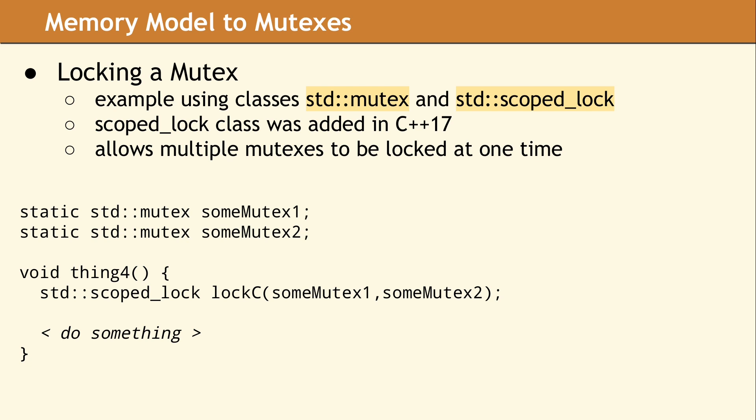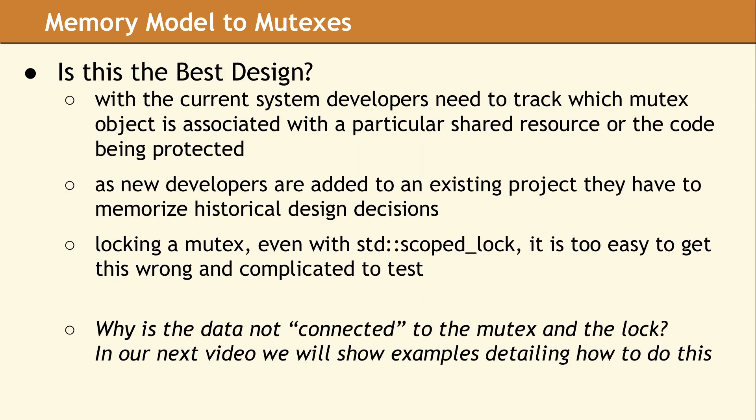The final lock class we want to show is std::scoped_lock. This is a relatively new class which was added in C++17. The constructor is variadic and accepts any number of mutex objects, which can be locked as one operation. The reason you may want to lock multiple mutexes at the same time is that the constructor of the scoped_lock class automatically ensures multiple mutex objects are locked and unlocked in an order which does not cause a deadlock. In these examples, we have shown several different ways to lock a given mutex object to protect code or a shared resource.